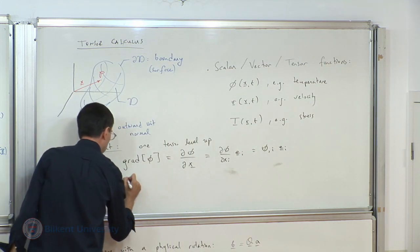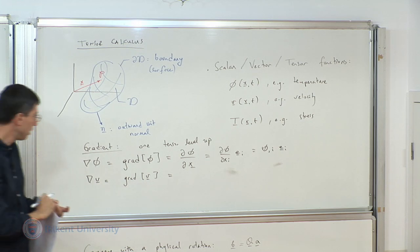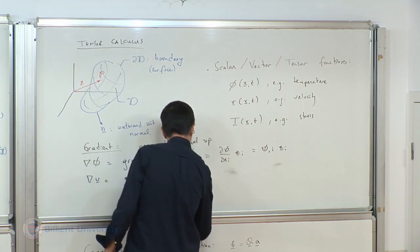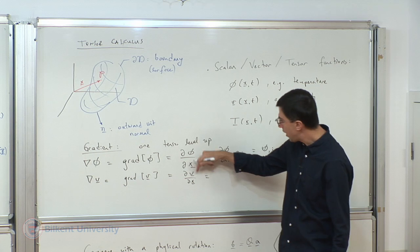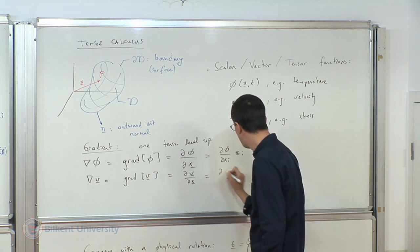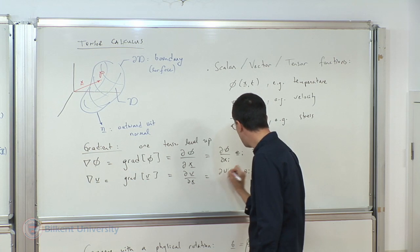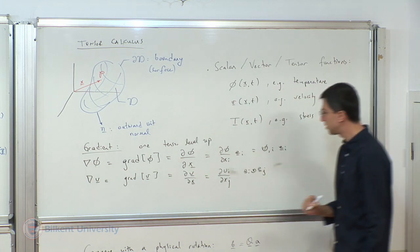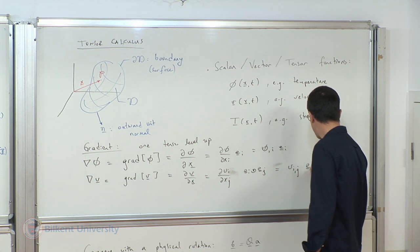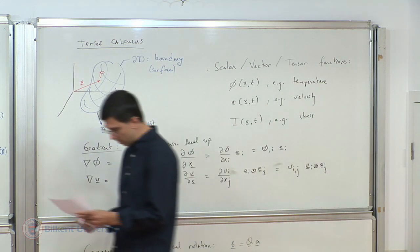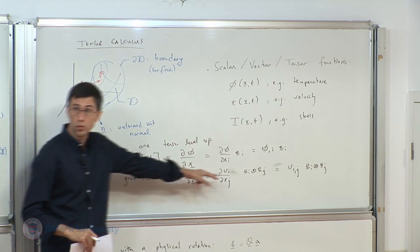The gradient can also act on a vector, expressed as del v over del x. The components are determined going from top to bottom: in basis e_i tensor e_j, the components are del v_i over del x_j, or compactly v_i comma j times e_i tensor e_j. From a vector we go one level up to a second-order tensor.